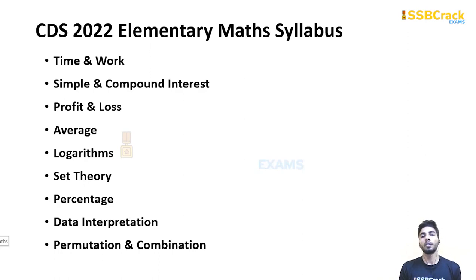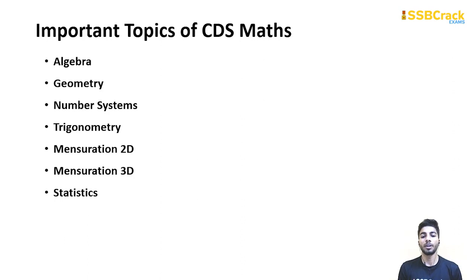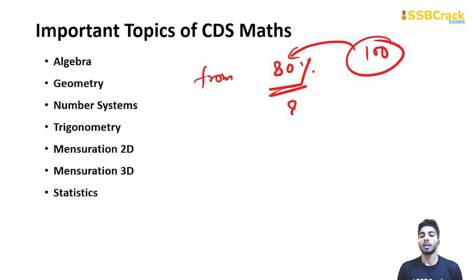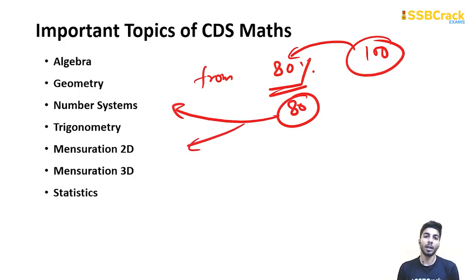Because we have only 30 days, we can't cover all the topics. So we will cover only these seven topics: Algebra, Geometry, Number System, Trigonometry, Mensuration 2D, Mensuration 3D, and Statistics. The reason I'm covering only these seven topics is that around 80% of questions in the examination come from them. Out of 100 questions, around 80 come from only these topics, so I suggest covering only these seven topics to score more.